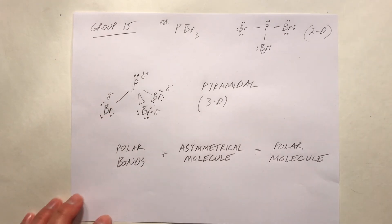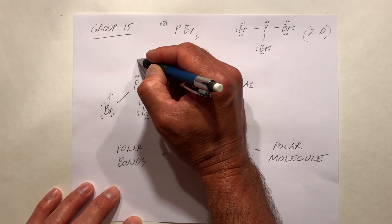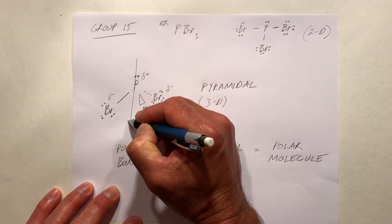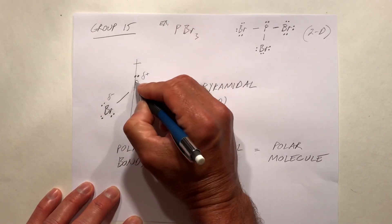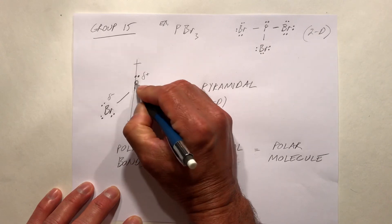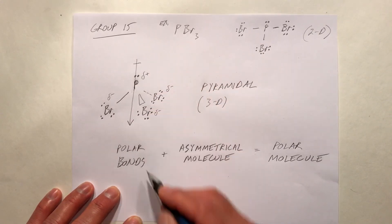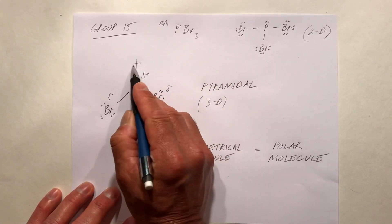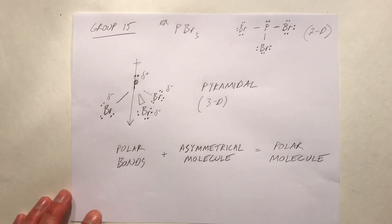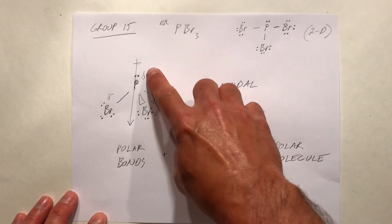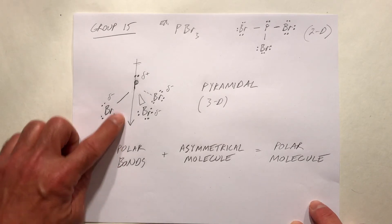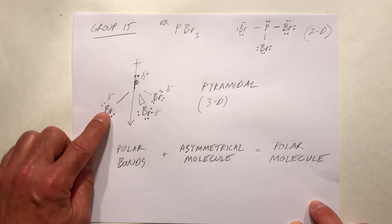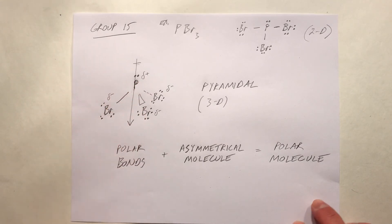We can draw a dipole moment across that molecule — an arrow pointing to the negative side of the molecule with a plus sign on the tail at the positive side. That indicates a polar molecule. So delta charges indicate bond polarity, and the arrow with the plus sign indicates molecular polarity.